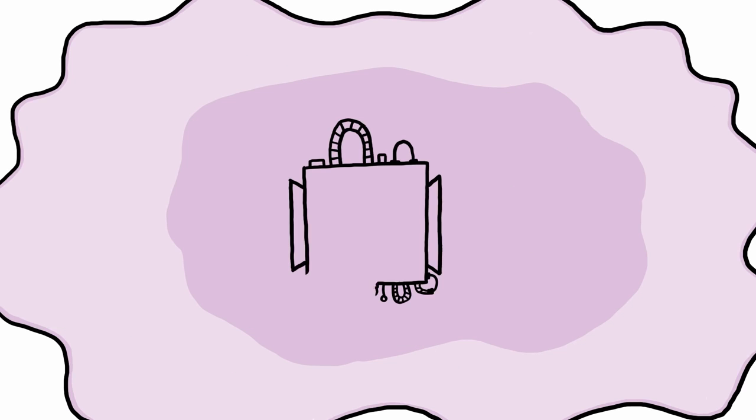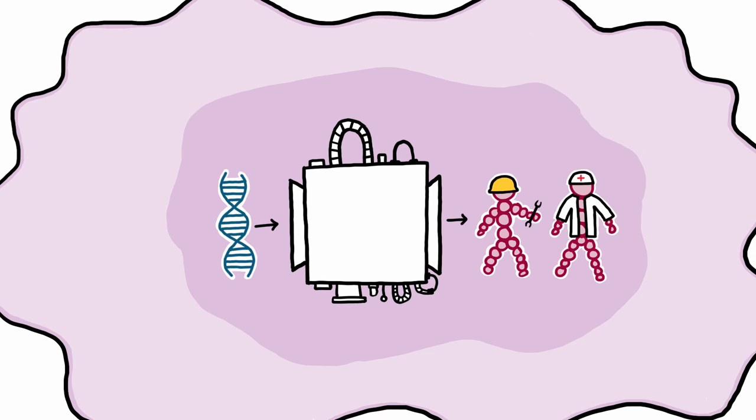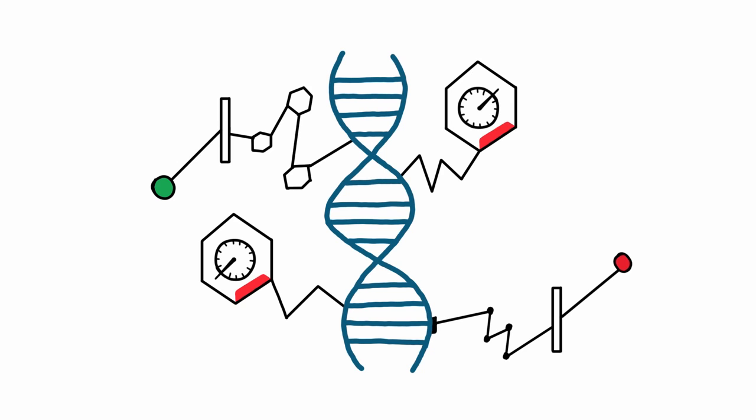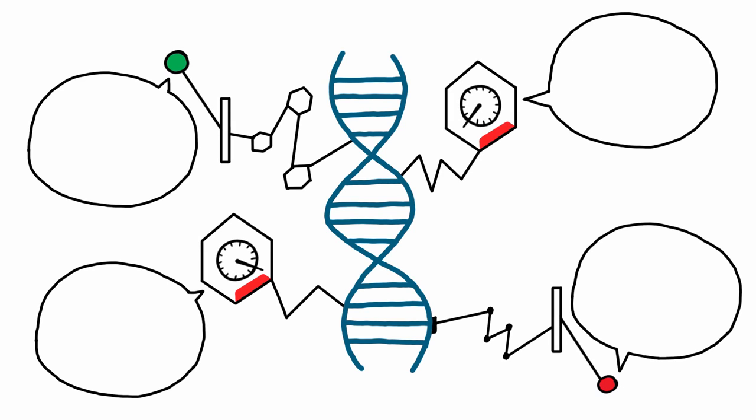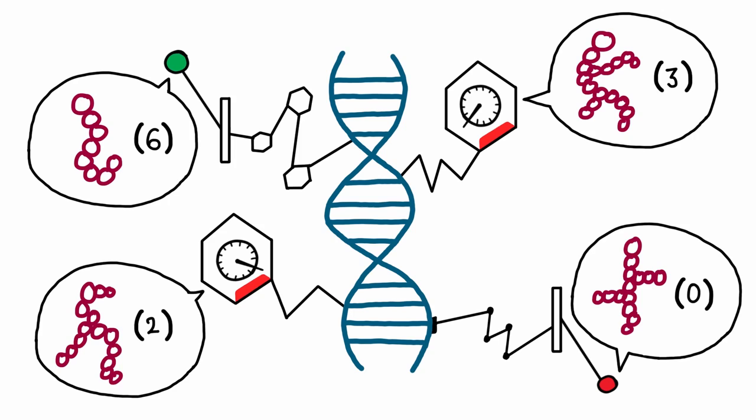In every cell, biological machinery constantly translates DNA into the proteins needed to carry out vital processes. Chemical switches attached to the DNA turn genes on or off or up and down, telling the machinery which proteins to produce and in what quantities.